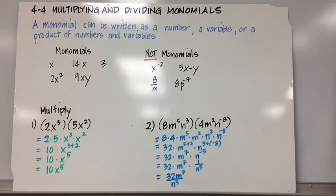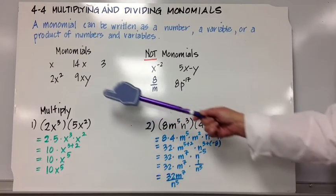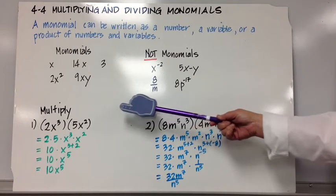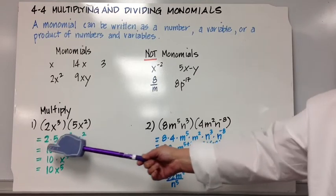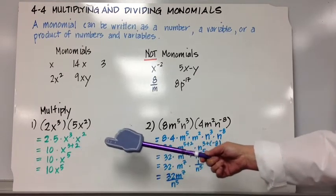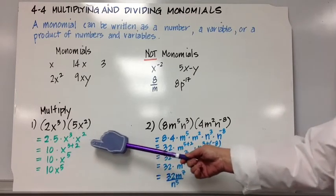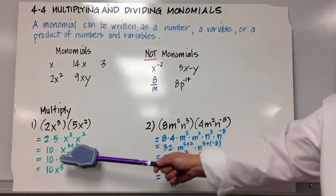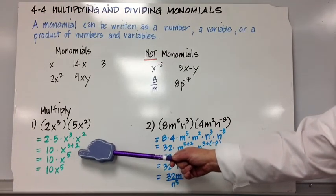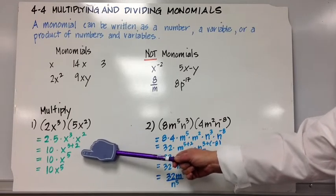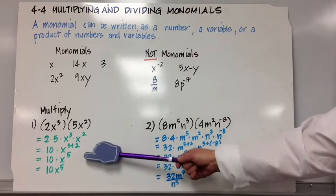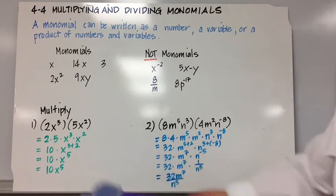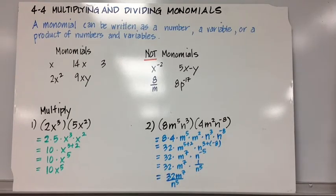Let's look at some examples of multiplying monomials. If I have 2x cubed times 5x squared, the first thing I do is apply the commutative property to put my constants and then my variable terms in order: 2 times 5 times x cubed times x squared. 2 times 5 is 10, and x cubed times x squared is x to the 3 plus 2. Remember, multiplying like bases, I add the exponents, and that equals 10x to the 5th. You've got to love the commutative property.